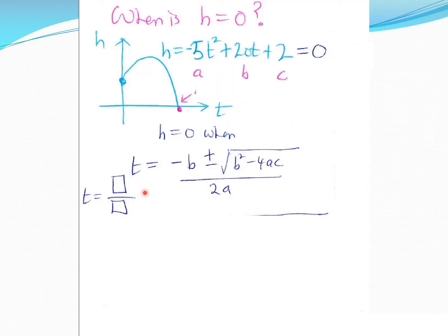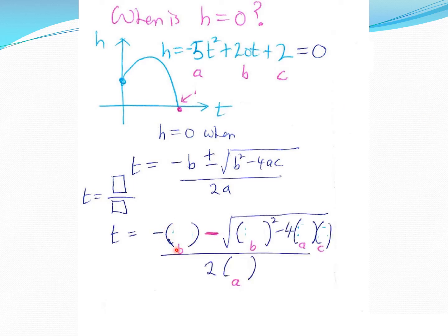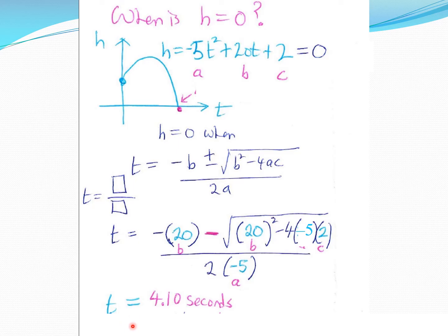Setting −5t² + 20t + 2 = 0 and using the quadratic formula with a = −5, b = 20, c = 2: substituting in — minus 20 minus √(400 − 4(−5)(2)) all over 2(−5) = −20 − √(400 + 40) all over −10. Using the calculator with the fraction button, we get t = 4.10 seconds. The other answer (using plus) gives a negative value. So the ball hits the ground after 4.10 seconds.